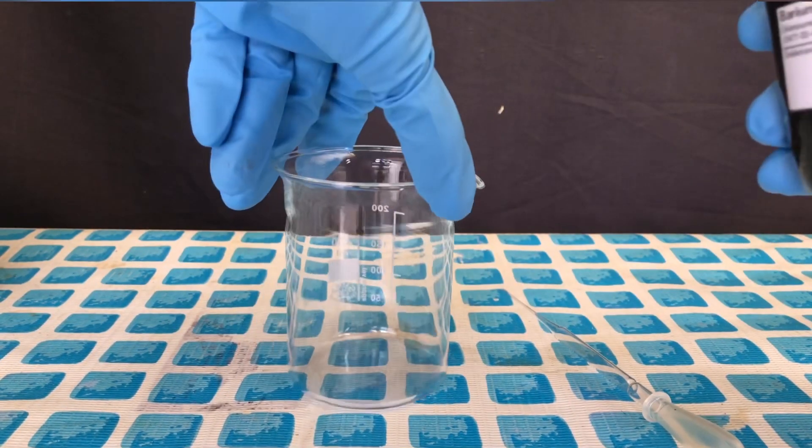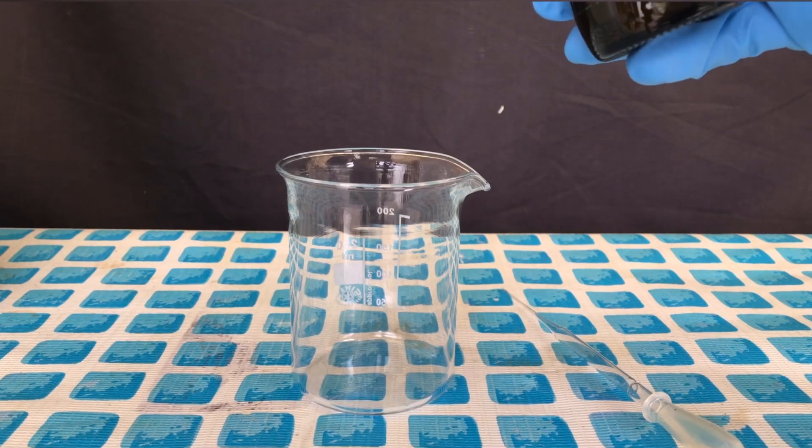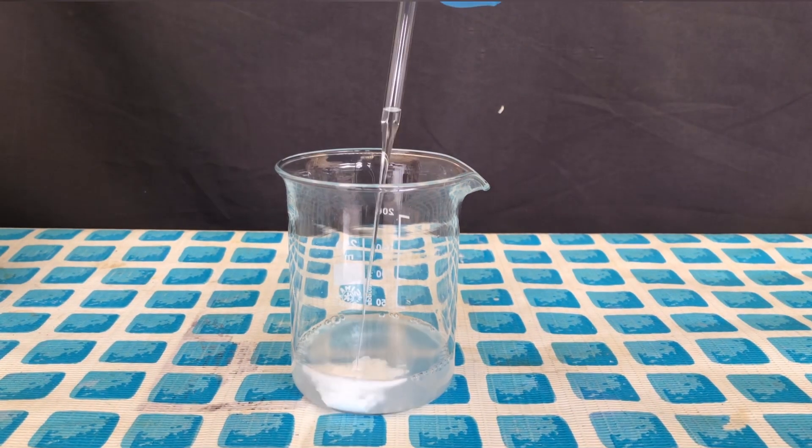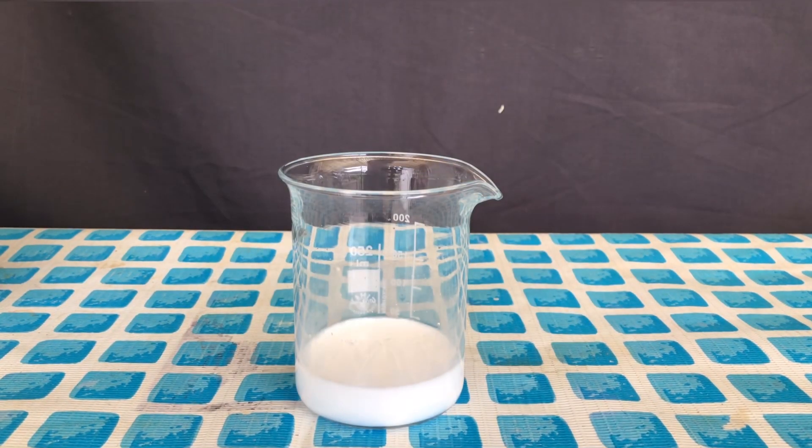For this you will need 25% barium chlorate solution and sulfuric acid. We used 14.9% sulfuric acid. We started off by adding the barium chlorate solution to a beaker. Afterwards, sulfuric acid was added dropwise.